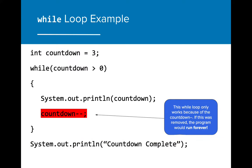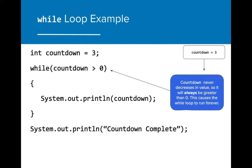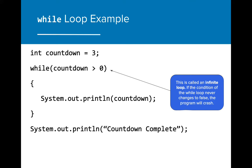This while loop only works because of the countdown-- call. If this wasn't included in the program, the program would run forever. If we remove countdown--, then the value of countdown never changes. If the value of countdown is always three, then the while loop condition will always be true. If the condition is always true, then the program will never stop. When a while loop runs forever, it is referred to as an infinite loop. This generally causes our programs to crash because the compiler isn't prepared to run the program infinitely. When writing while loops, it's important to pay attention to the condition that you are adding so that the program eventually exits.